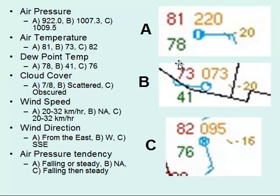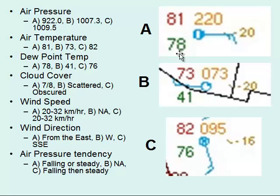Air temperature is straightforward — just read it off the model. It's color-coded, though often it isn't. Your air temperature is in the upper left corner; the lower left corner is your dew point temperature. For station model A, temperature is 81 and dew point is 78. For cloud cover, use your textbook to discern what each symbol means. Station A has 7–8 cloud cover, B has scattered cloud cover, and C is obscured.